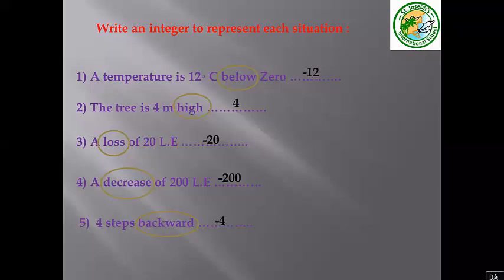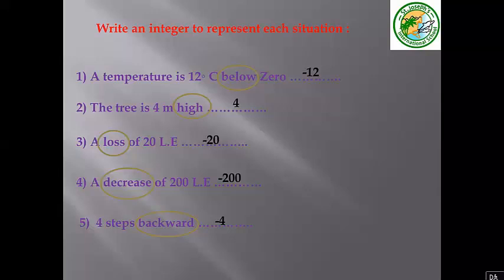We have keywords associated with negative integers and keywords associated with positive integers. Keywords for negative integers include: below, lose, degrees below, and backwards. Keywords for positive numbers include: high, forward, and increase.